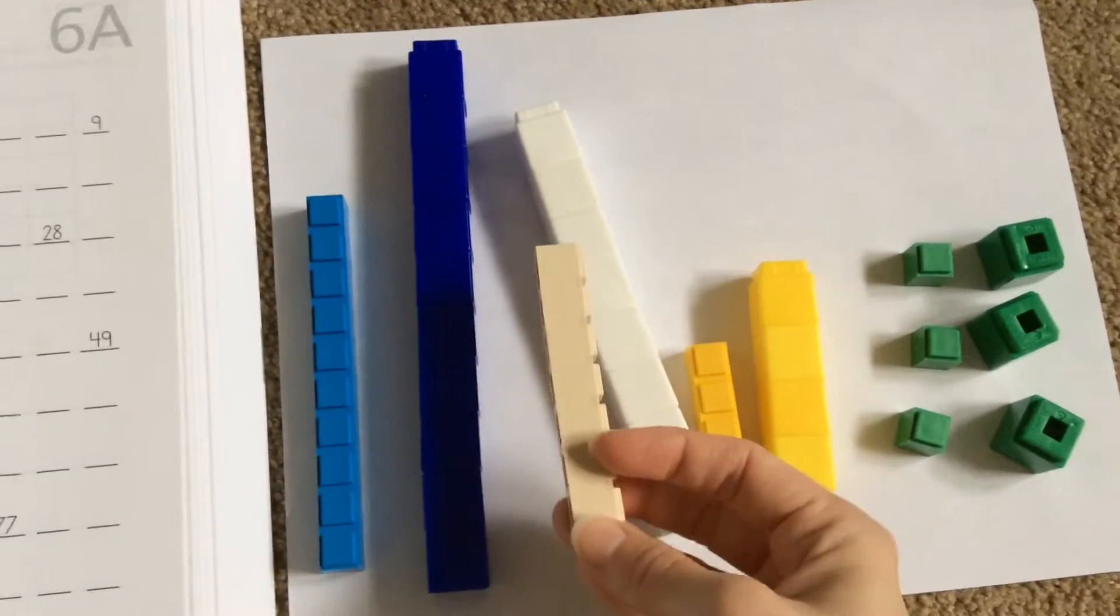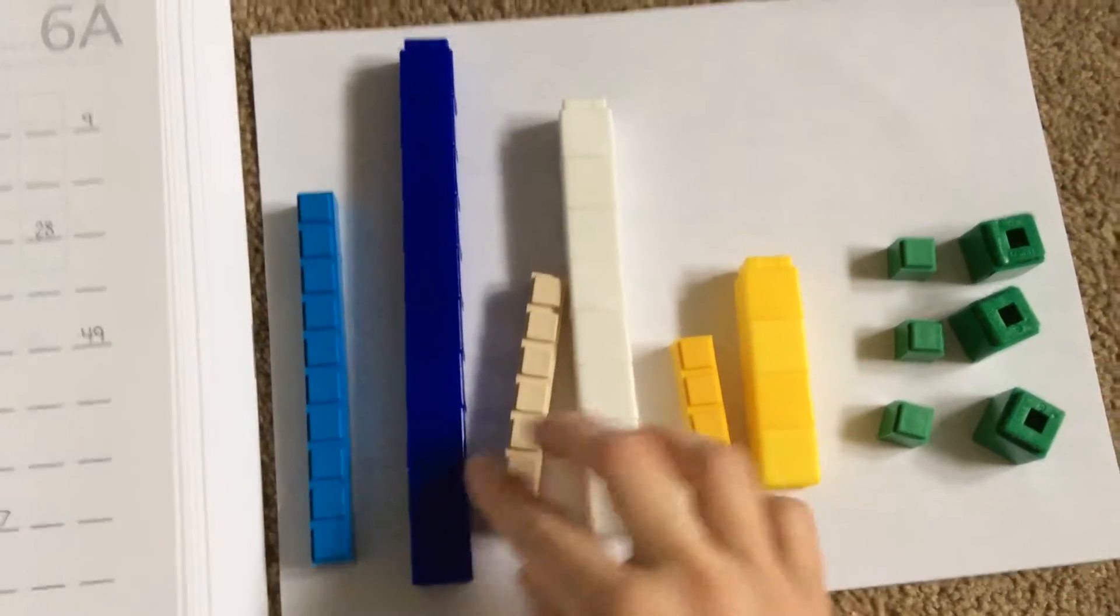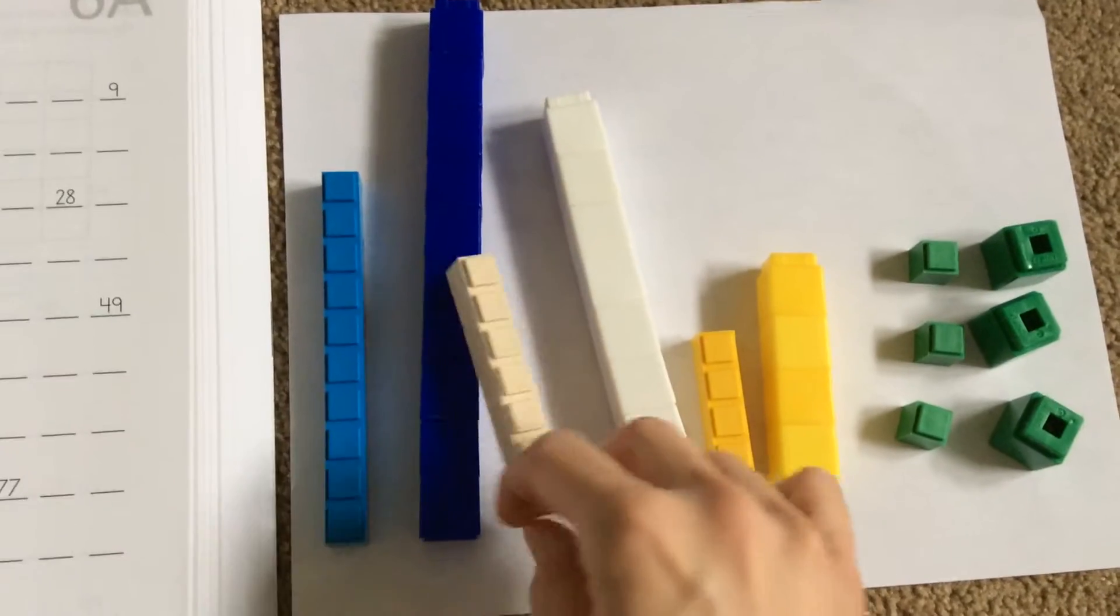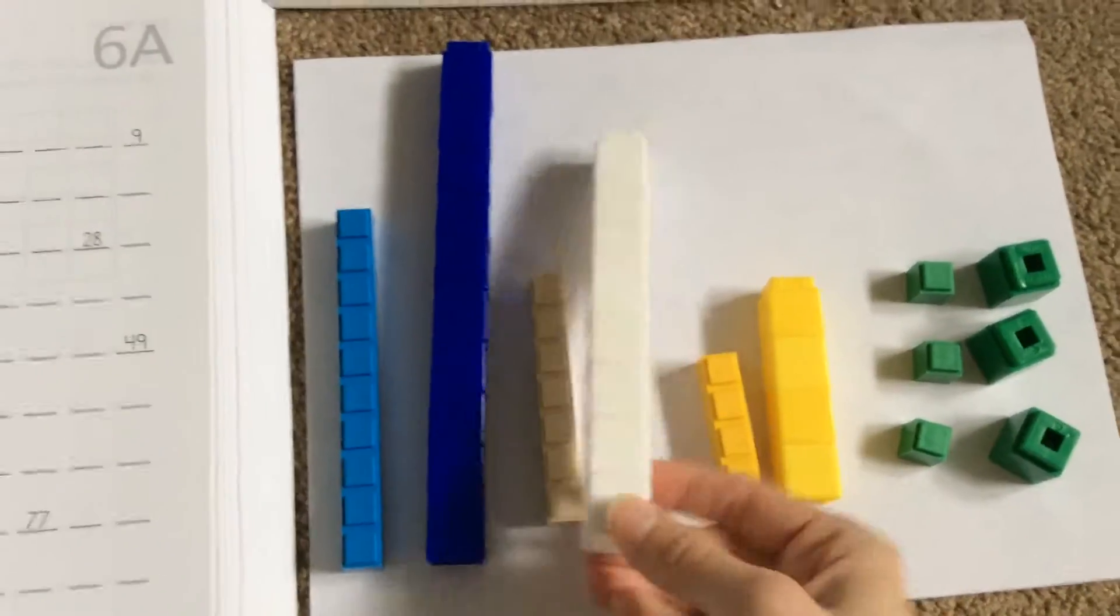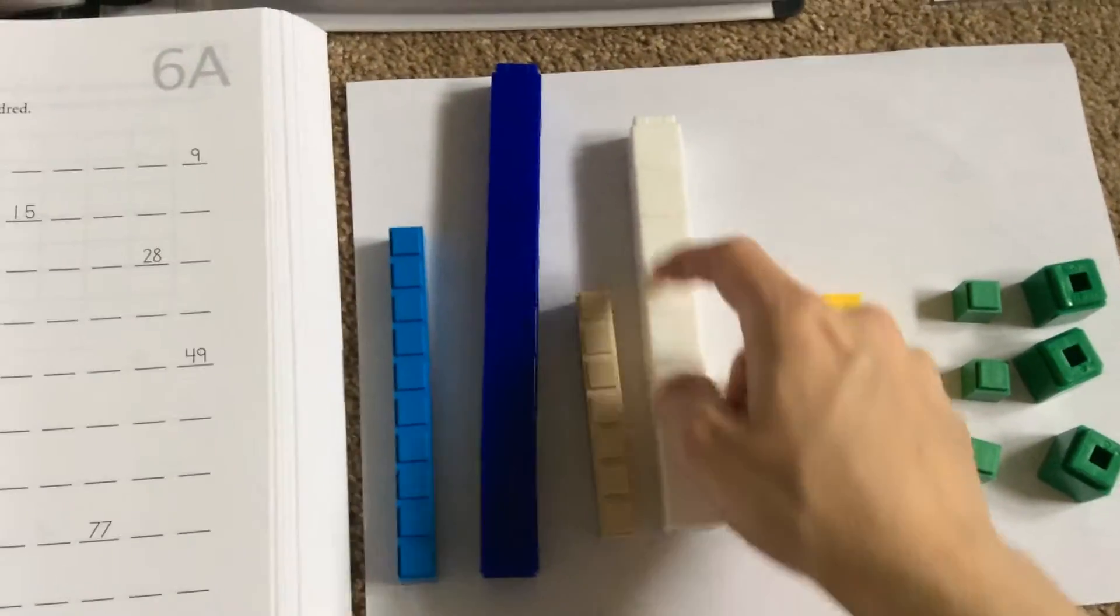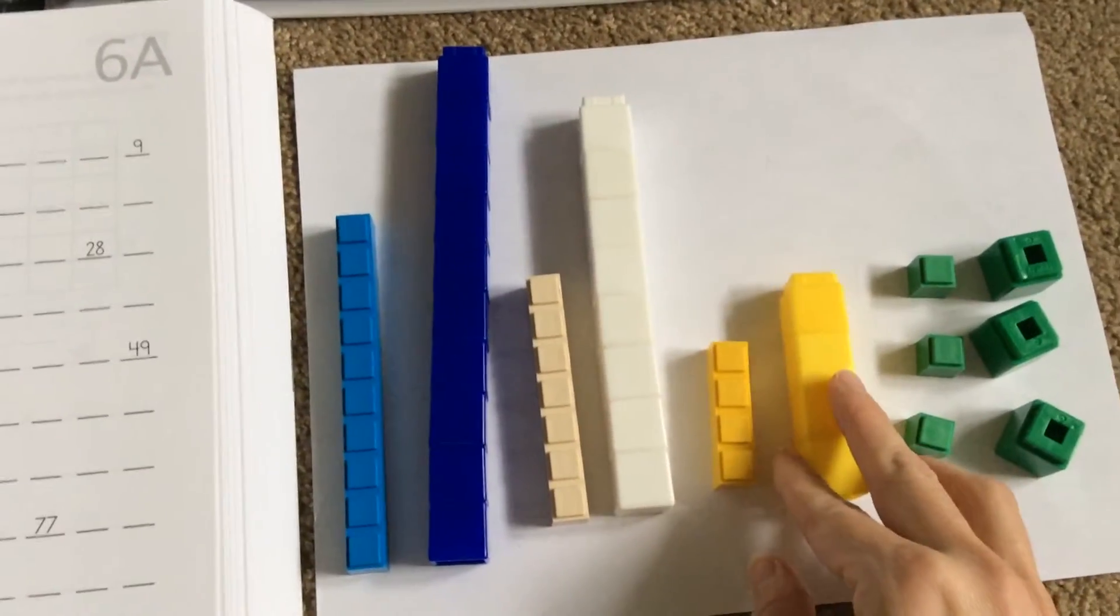Now you'll see that the Math U See ones don't come apart, like the Unifix, which is nice so that they're not maybe not counting as much. They see this color and they know exactly what number it is. They can count these still, but this is a little easier. This can fall apart. But it can definitely be done.